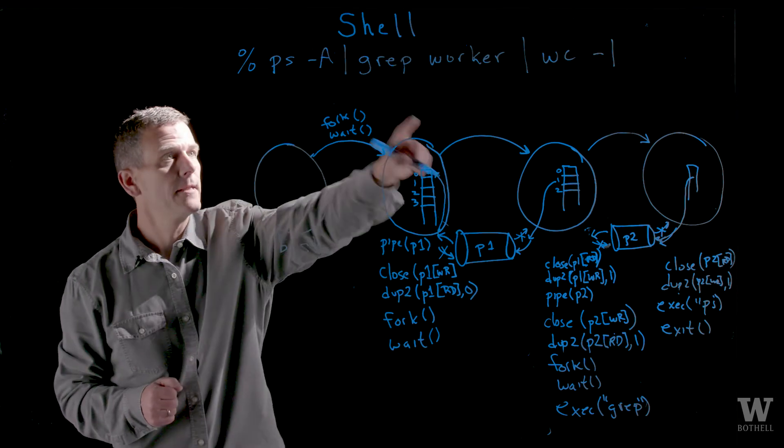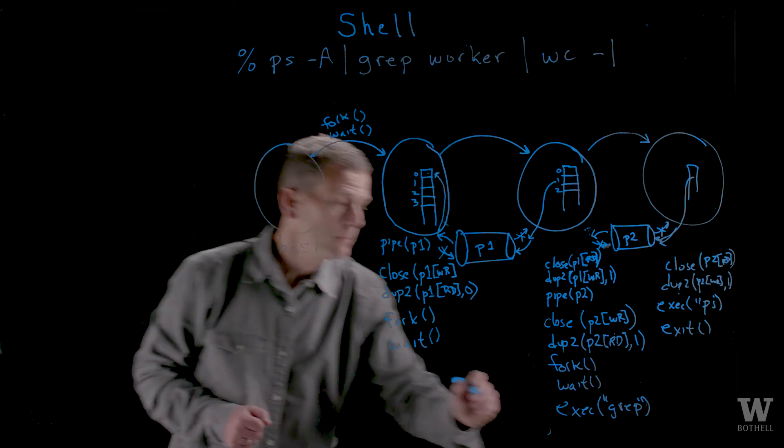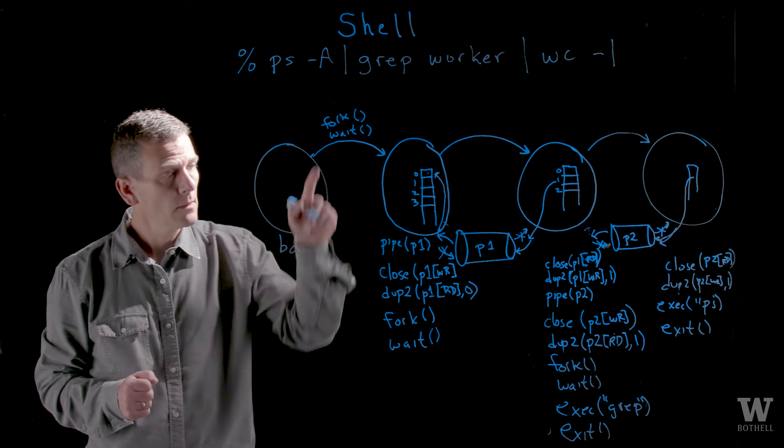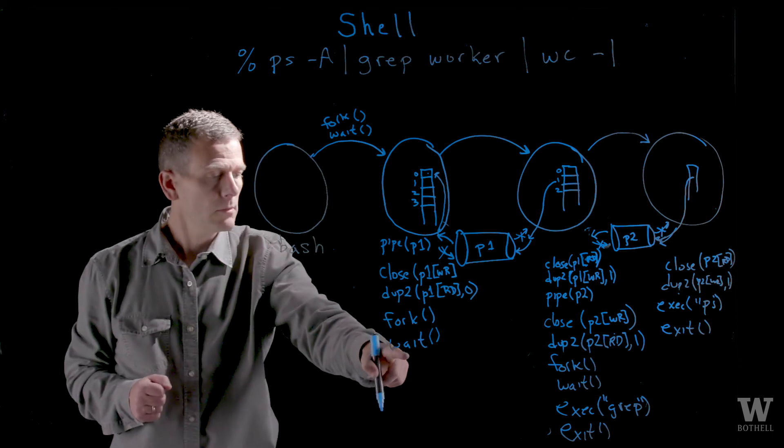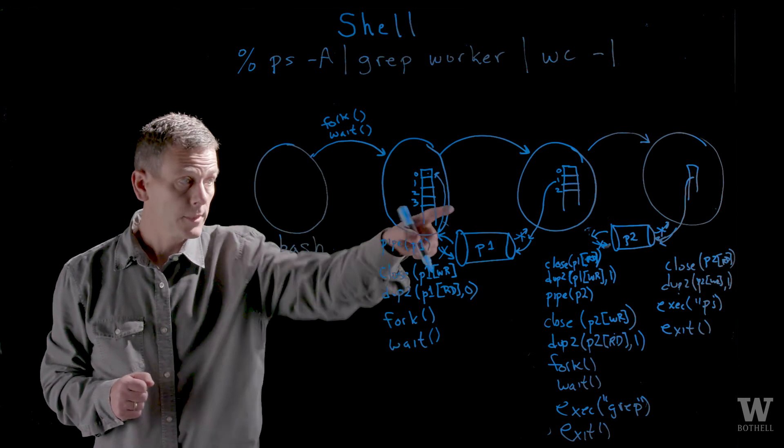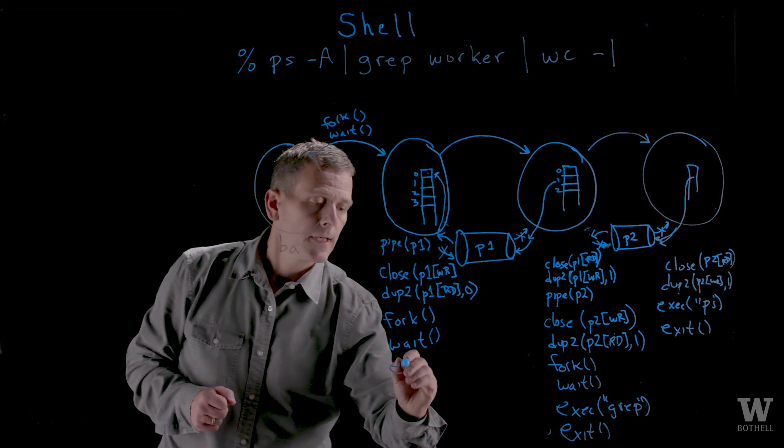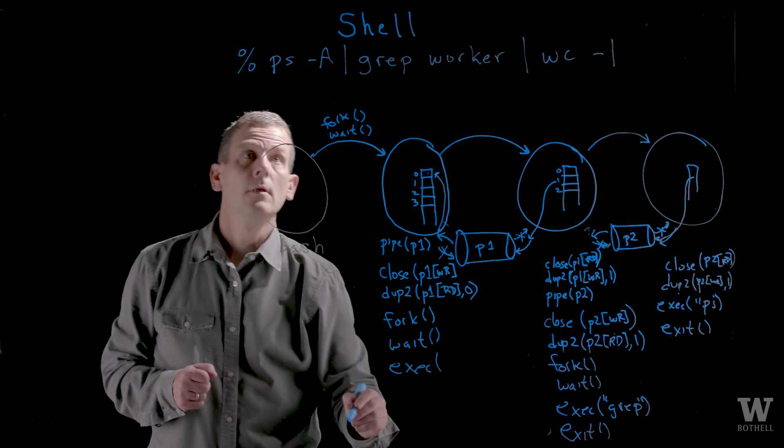It will execute, take the output of the grep, put it in pipe one. Let's exit that process. The child of the bash shell now will wake up because it's waiting for its child to finish, or the grandchild of the bash shell. And we'll exec our word count.